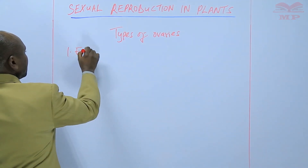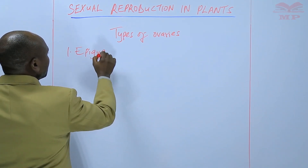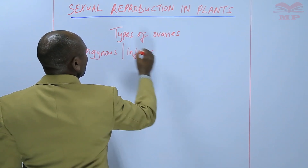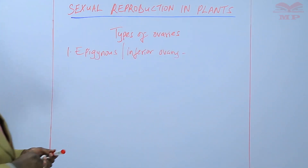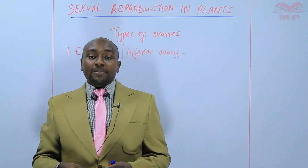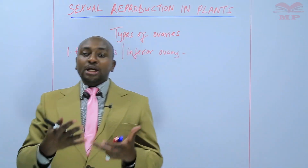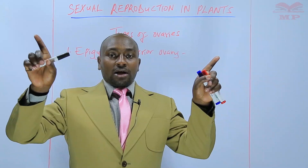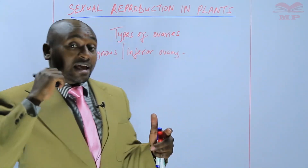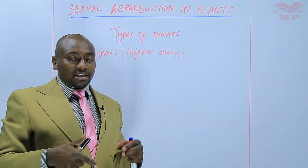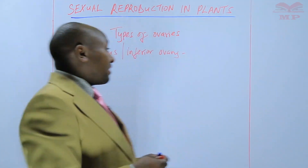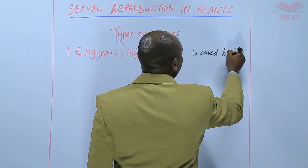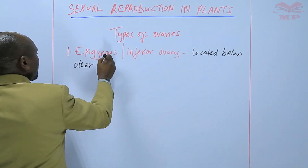We shall start with the first one, referred to as epigynous, or an inferior ovary. This is a type of ovary that is formed below the other floral parts. The other floral parts — the corolla and the calyx — are emerging above the ovary. So in this case, the ovary is said to be inferior because it is at a lower position compared to the other floral parts. The epigynous ovary is an ovary that is located below other floral parts.